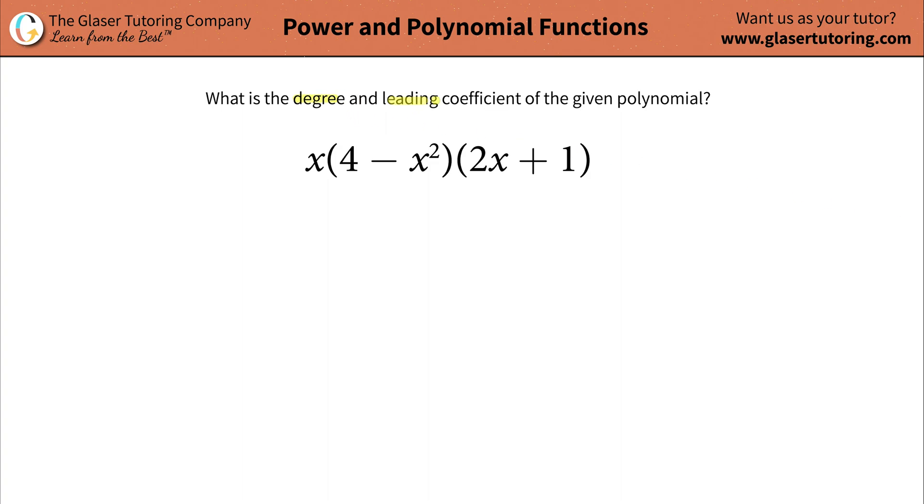What is the degree and leading coefficient of the given polynomial x times 4 minus x squared times 2x plus 1?